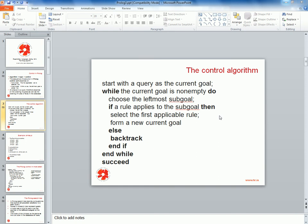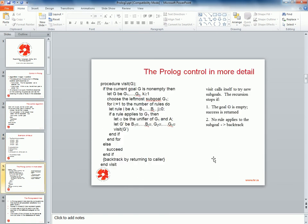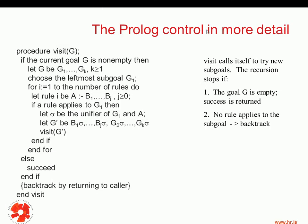At this point we have seen the first version, a higher-level version of the Prolog Control Algorithm, but what we want to do now is to go into more detail. We have here a function or procedure that we call 'visit'. G is the current goal that we're going to visit, and the reason we call this 'visit' is because we are going to visit a particular node in the Prolog search tree.